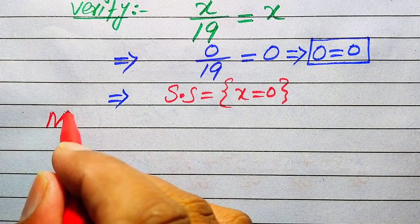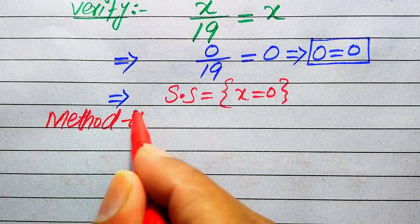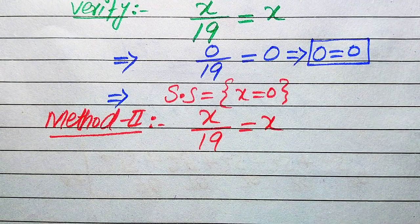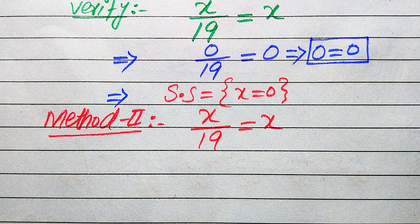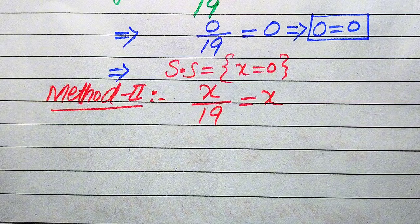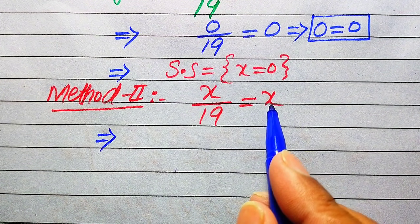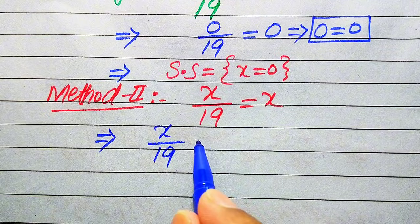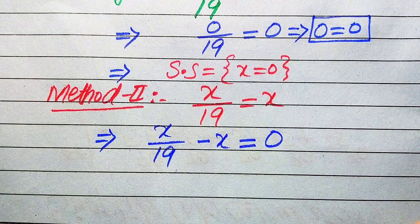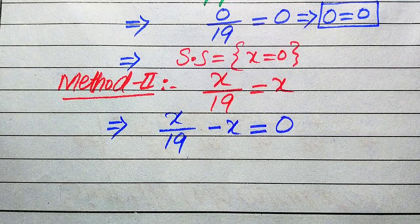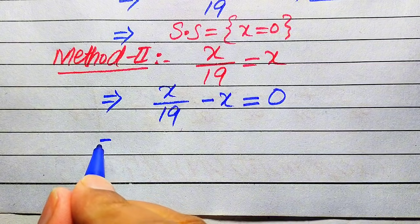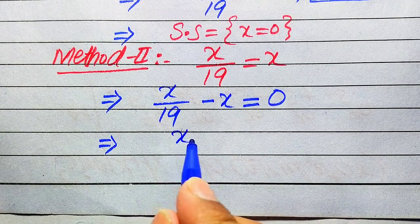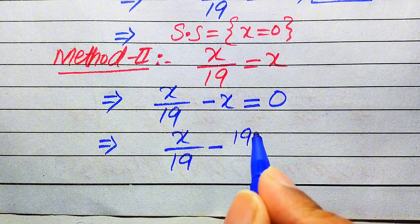Now we move to the second method. The given equation is x divided by 19 equals x. In the second method we use the LCM technique. We move x from the right-hand side to the left, making it negative: x divided by 19 minus x equals 0. To take the LCM, the denominator of x must also be 19, so we multiply and divide x by 19.